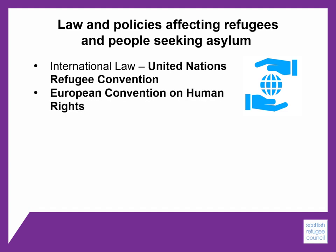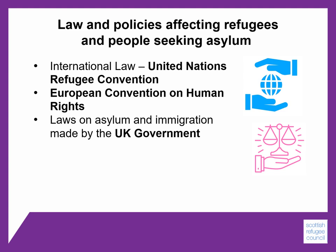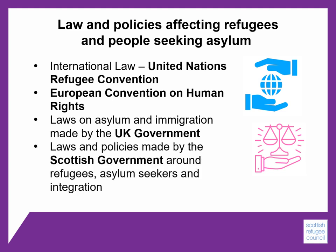We also have the European Convention on Human Rights, which is about protecting human rights and the rule of law and promoting democracy across Europe. In terms of UK law and legislation, laws around immigration and the asylum process are made by the UK government. The Scottish government doesn't have responsibility for immigration or asylum, but can still make laws and policies around other aspects of life which affect refugees and people seeking asylum and their integration. An example of this is the New Scots Refugee Integration Strategy, which I'll talk about in more detail in one of the next slides.